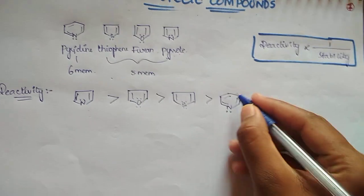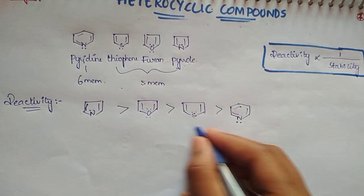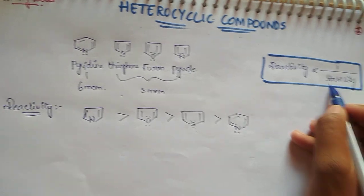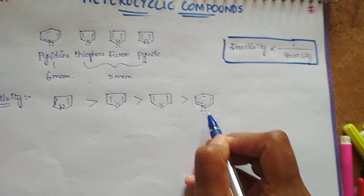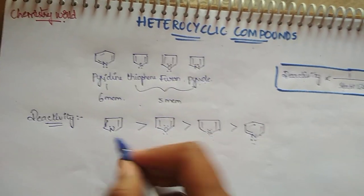Pyridine is a six-membered ring, so it is more stable than these five-membered rings. More stable means less reactive, so we consider pyridine as the least reactive.